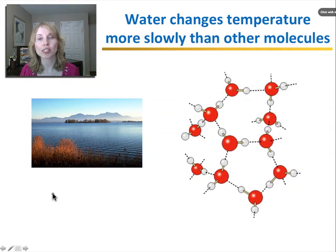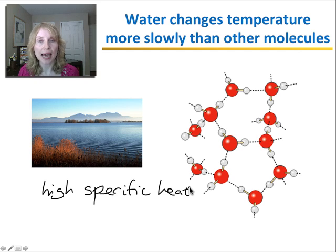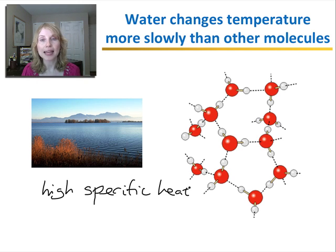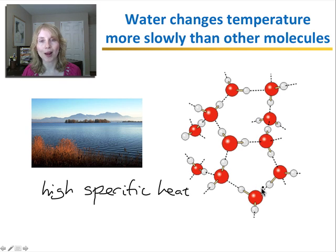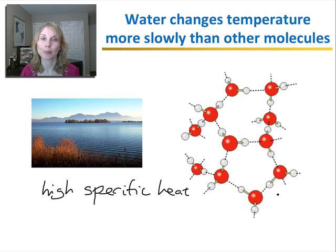Another property of water is that it changes temperature more slowly than other molecules — water exhibits high specific heat. Specific heat is the measure of how much heat energy needs to be added to a substance before it changes temperature by one degree Celsius. Water has a high specific heat, meaning you need to add a lot of energy before you can increase its temperature. This is because the initial heat energy goes into breaking the hydrogen bonds that hold the water molecules together before it actually raises the temperature. This property is important for moderating the climate on our planet as well as for moderating the internal temperature of living organisms.